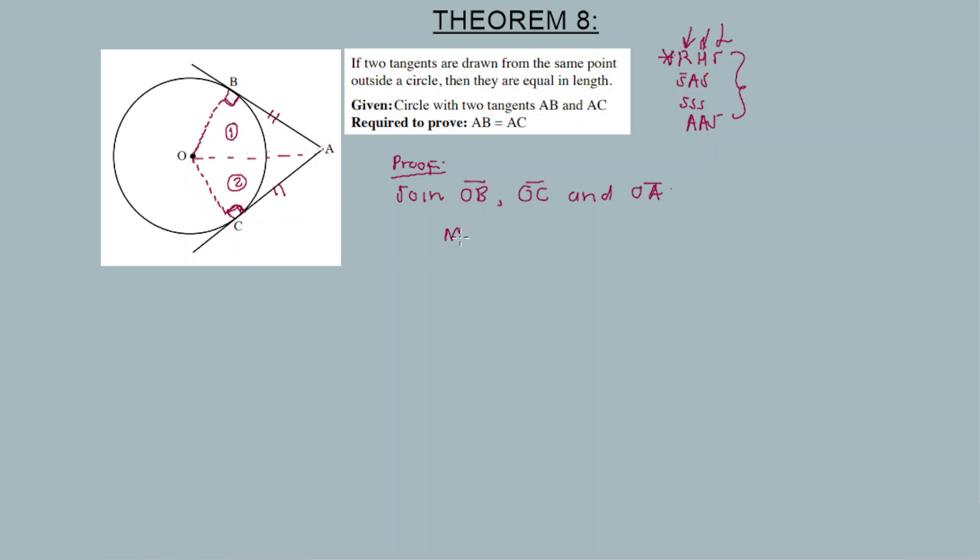So let me make reference. This is angle 1, angle 2, angle 1, angle 2. So this radius divides the angle at P into two angles: B2 and B1, same for C's, C1 and C2. Therefore, angle B1 is equal to angle C2. They are both equal to 90 degrees. How do we know these angles? It's because of theorem number 7, which states that a tangent is perpendicular to the radius. It's perpendicular to the radius.